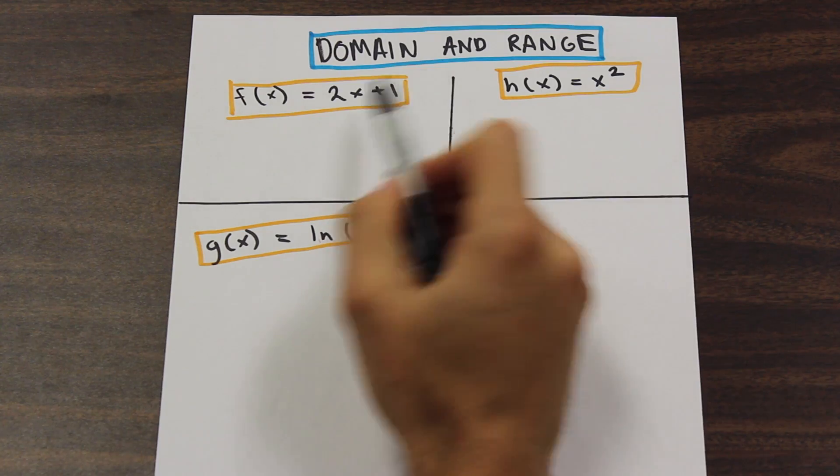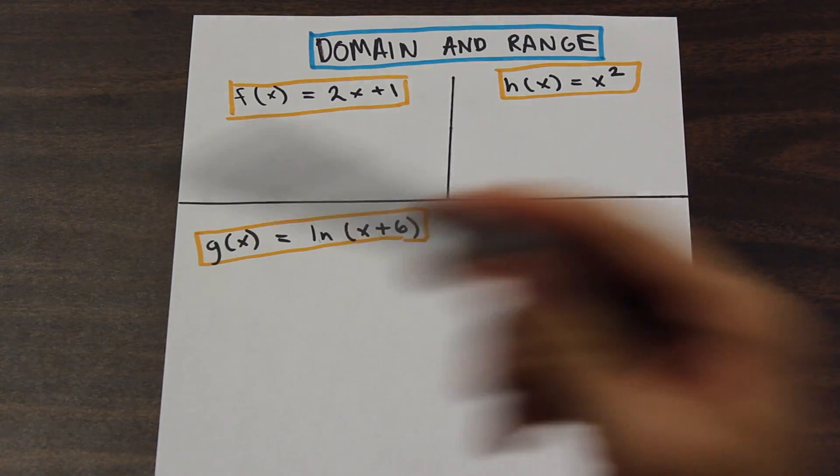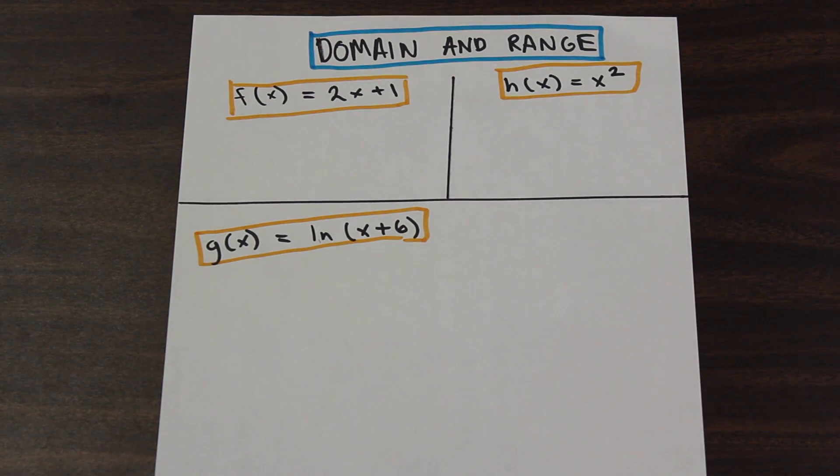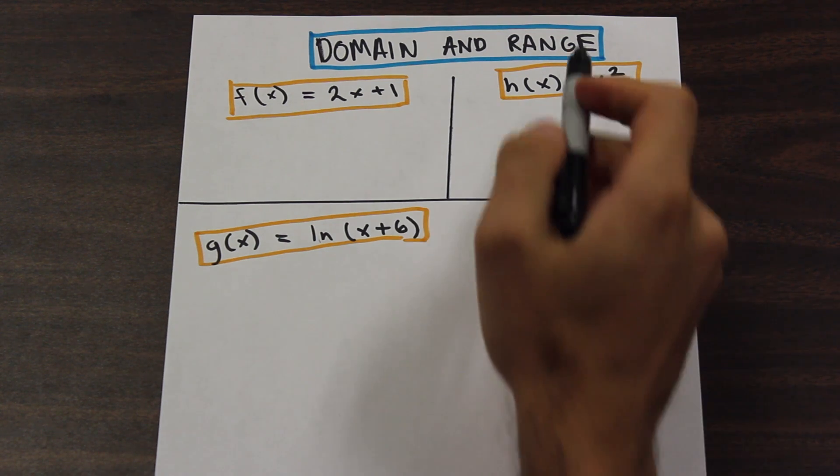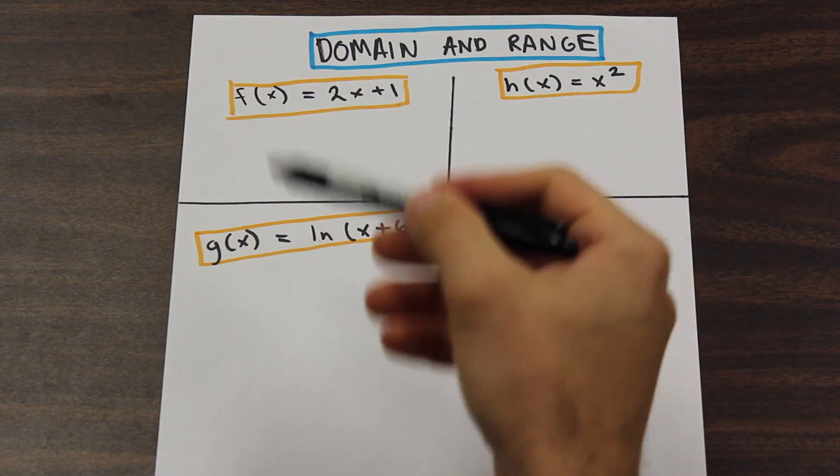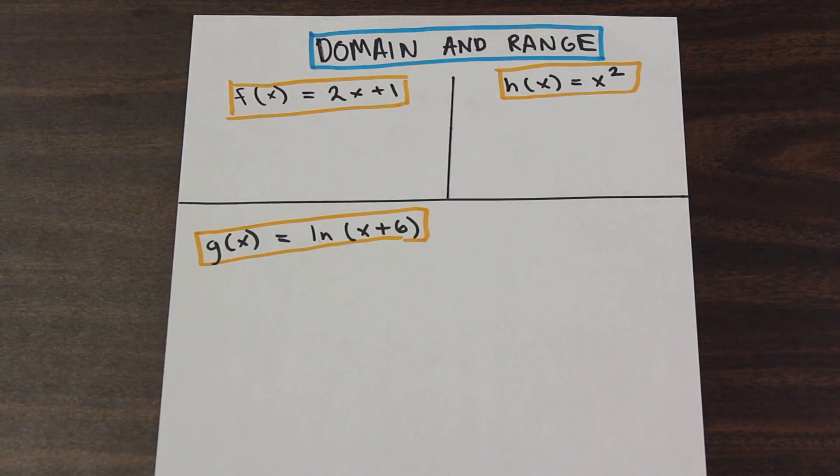There's an easy way to do this. For the domain, we just need to look at what kind of function we have and we can solve for it either mathematically or just look at it and see whether or not values are okay to put in. And the range, if we take the inverse of the function, which I'll show you in a second, the domain of the inverse of the function is equal to the range.